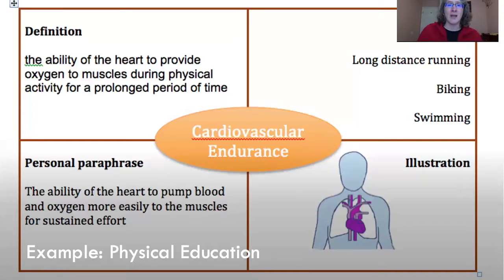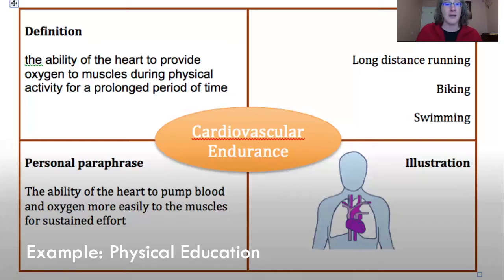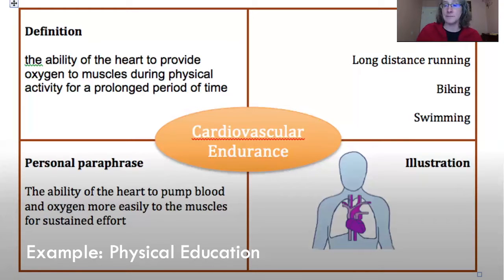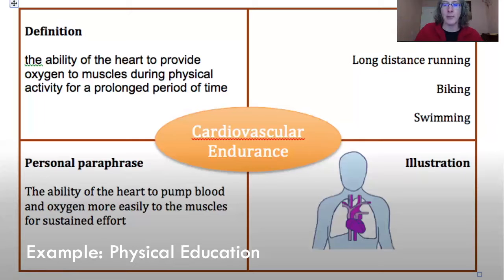For example: 'the ability of the heart to pump blood and oxygen more easily to the muscles for sustained effort.' There aren't a lot of confusing words — 'ability of the heart to provide oxygen to muscles during physical activity for a prolonged period of time.' That definition itself is not terribly difficult, but in my personal paraphrase I demonstrate that I really do understand the term. My illustration deals with the lungs and the heart, vessels, arteries, and then moving that would spread out throughout the body.